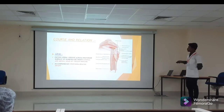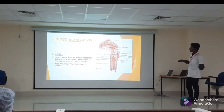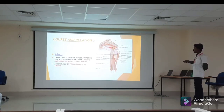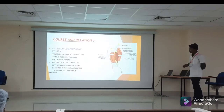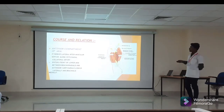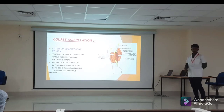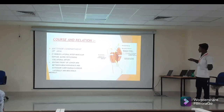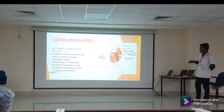In the arm, the radial nerve enters through the spiral groove across the posterior surface of the humerus between the lateral and medial heads of triceps, accompanied by the profunda brachii artery. In the lower part of the arm, it pierces the lateral intermuscular septum with the radial collateral artery, then enters the front of the forearm between the brachioradialis and brachialis.